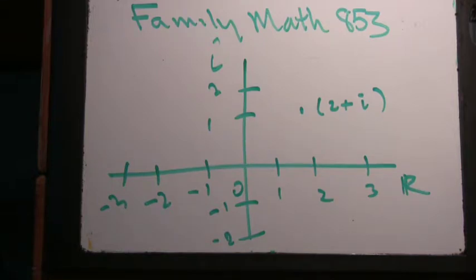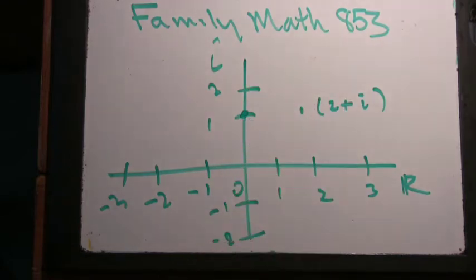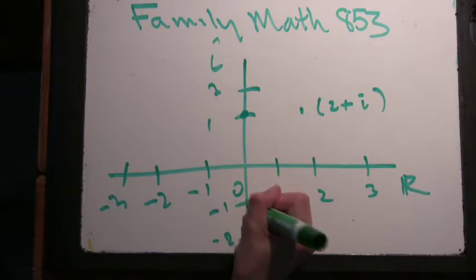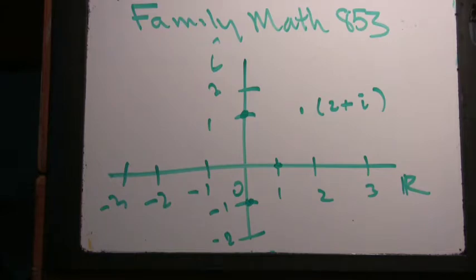Give me an example of another Gaussian integer. Do they have to be a regular integer plus one of these? Could it just be i? Very good question. Yes, i all by itself is a Gaussian integer. What would be another example similar to what you just did? Negative i? Yeah. And one is also a Gaussian integer.